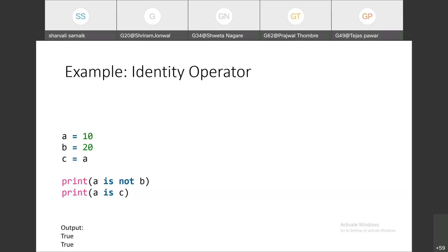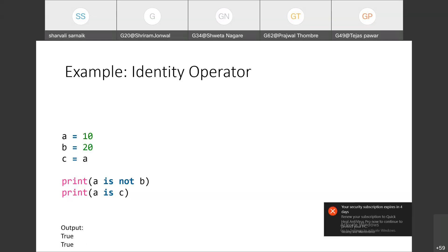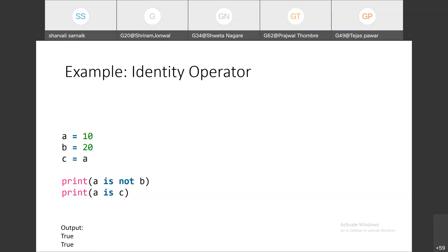This is all about operators in Python programming. We have seen arithmetic operators, comparison operators also called relational operators, assignment operators, logical operators — and, or, not — membership operators — in and not in — and identity operators — is and is not. The logical, membership, and identity operators are very important in Python programming.